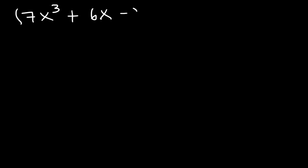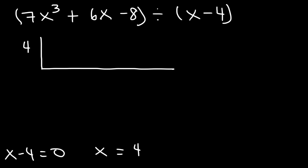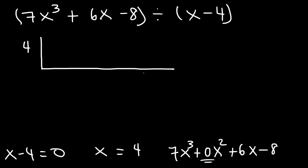Number 4: 7x cubed plus 6x minus 8, divided by x minus 4. This one is a little different than the last three problems, so be careful. Setting x minus 4 equal to 0 and adding 4 to both sides gives x equals 4. Now, when you write the coefficients, if you put 7, 6, and negative 8, you won't get the answer right. You need to be aware of 0x squared. Write this in descending order — the 0 is very important. So it's going to be 7, 0, 6, negative 8. If you forget this 0, your answer will be wrong.